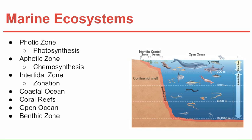In addition to the photic and aphotic division, marine biologists also divide the ocean into zones based on depth and distance from shore: the intertidal zone, the coastal ocean, and the open ocean — each supporting distinct ecological communities. There is also the benthic zone, which is the entire ocean floor.